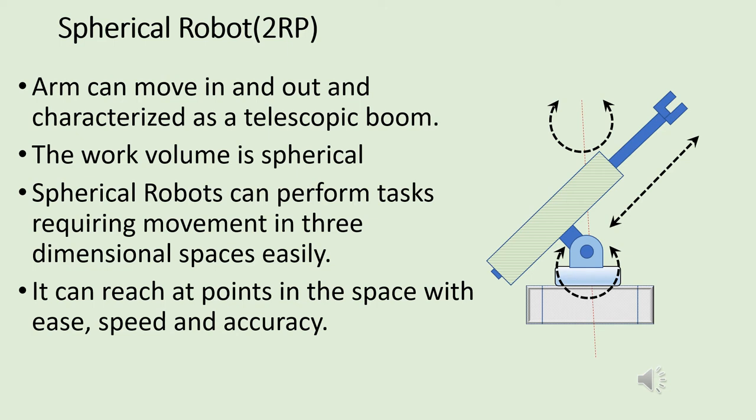In the case of a spherical robot, the arm can move in and out and is characterized as a telescopic arm. The work volume of the spherical robot is spherical in shape. Spherical robots can perform tasks requiring movement in three-dimensional space very easily. They can reach any point in space with ease, speed, and accuracy.